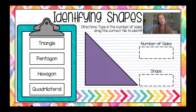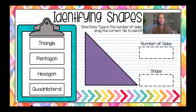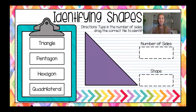This one you're a little bit more familiar with. Count the number of sides and write the name of the shape. The number of sides is one, two, three. And the name of the shape is triangle, because 'tri-angle' means it has three angles, also meaning it has three sides.